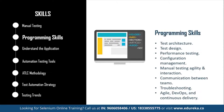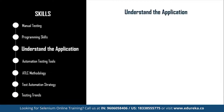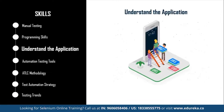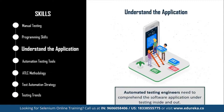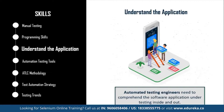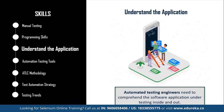Next is understanding the application. Common application details every automation tester needs to consider are: which programming languages were used in developing the application, on what platform it is built, which databases are involved, and whether there are any web services or APIs connected to different parts of the system. Make sure you are completely thorough with the application you are going to test via automation testing.